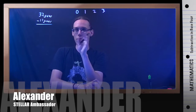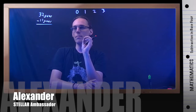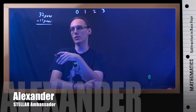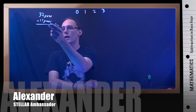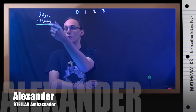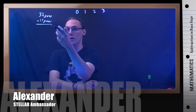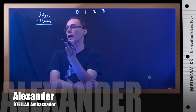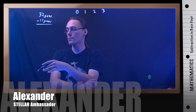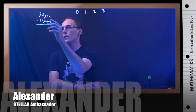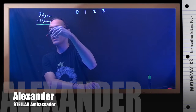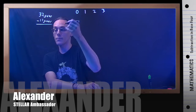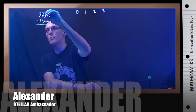So if you remember with base 10 subtraction, if the number I'm subtracting is bigger than the number which I'm taking it away from, I'm going to have to borrow. So here I've got 2 minus 3 in base 4, so I need to borrow from over here.